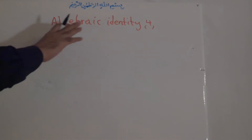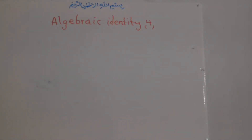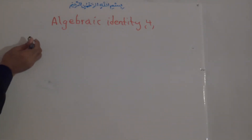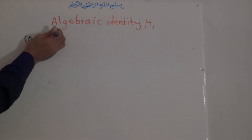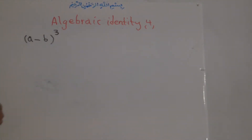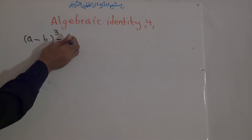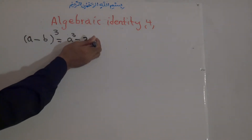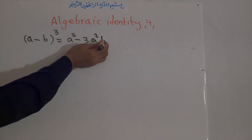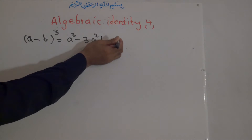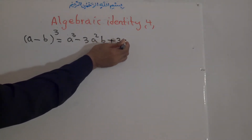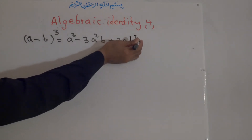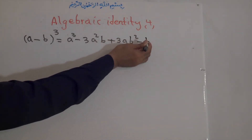Our title is Algebraic Identity number 4. Algebraic Identity number 4 is the binomial (a minus b) to the power of 3, and this is equal to a to the power of 3 minus 3a squared b plus 3ab squared minus b to the power of 3.